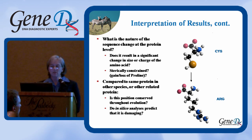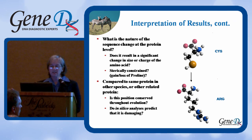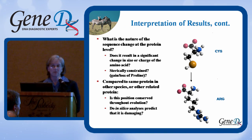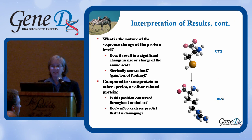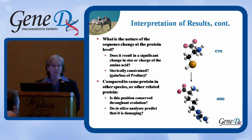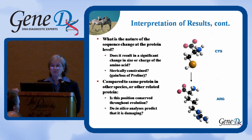Is there a constraint on the protein caused by loss of a proline, for example? Another question we ask is, compared to the same protein in other species or other related proteins in the same family, is this position conserved throughout evolution? We'll look through mammals down to chicken, to fish, to zebrafish — we like zebrafish particularly — all the way down to the common earthworm. If this position in that protein has been conserved, we think it's probably there for a reason, and that gives us some feeling that this may be a more important change.